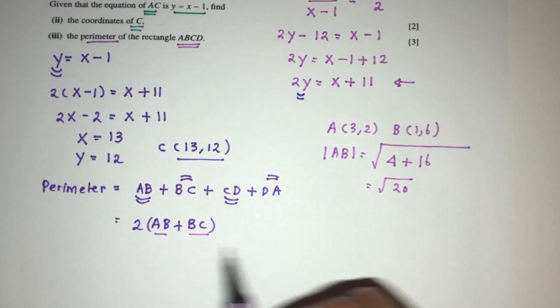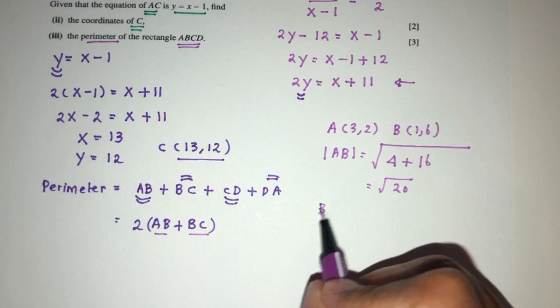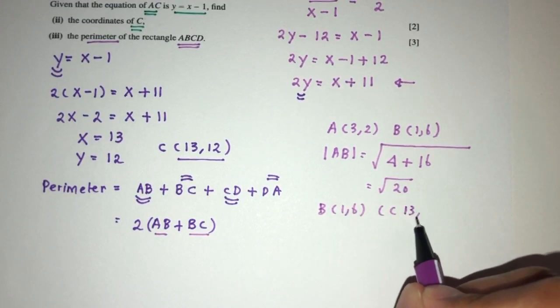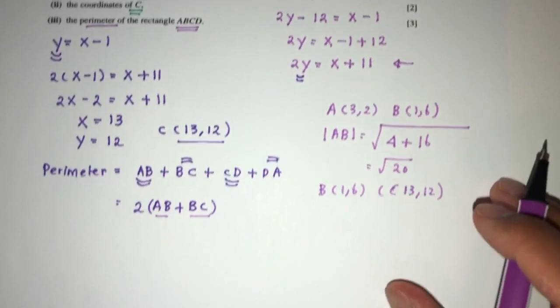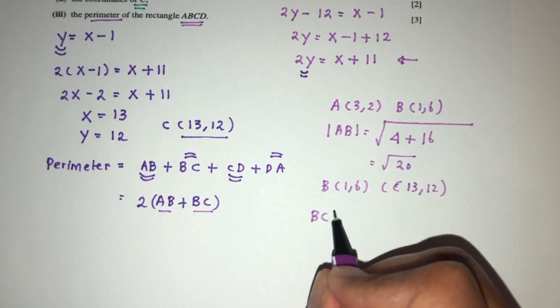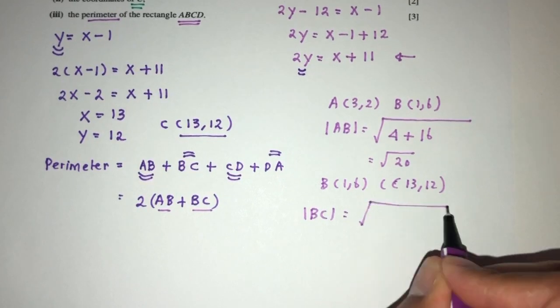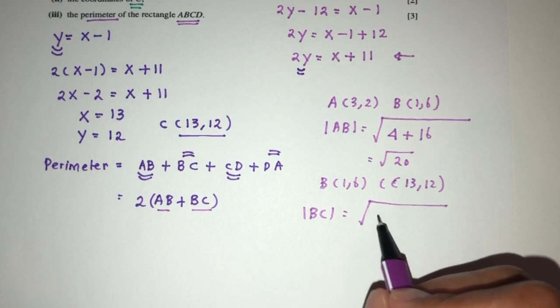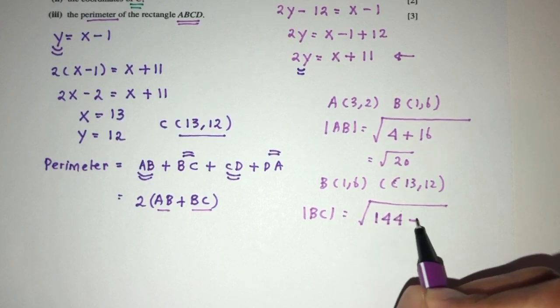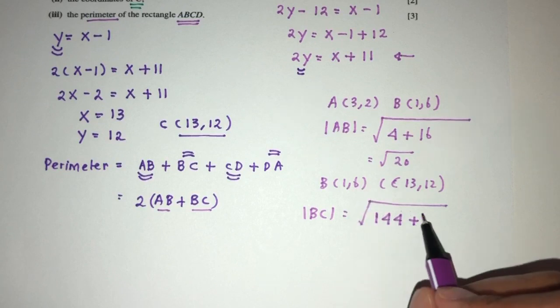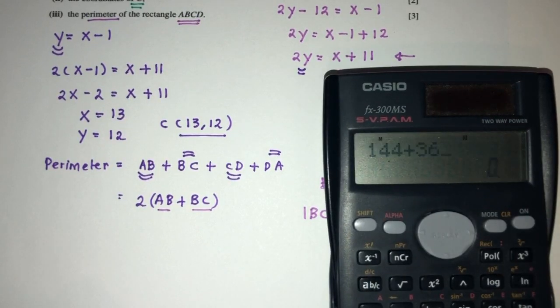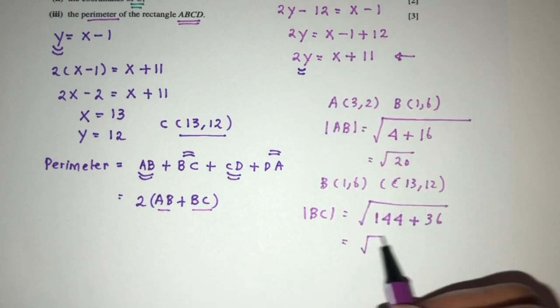Now moving on to BC. B is (1,6) and C was found to be (13,12). So length of BC will be x2 minus x1. So 13 minus 1 is 12 square, plus 12 minus 6 will be 6 plus square that will be 36. That will be 144 plus 36, root of 180.